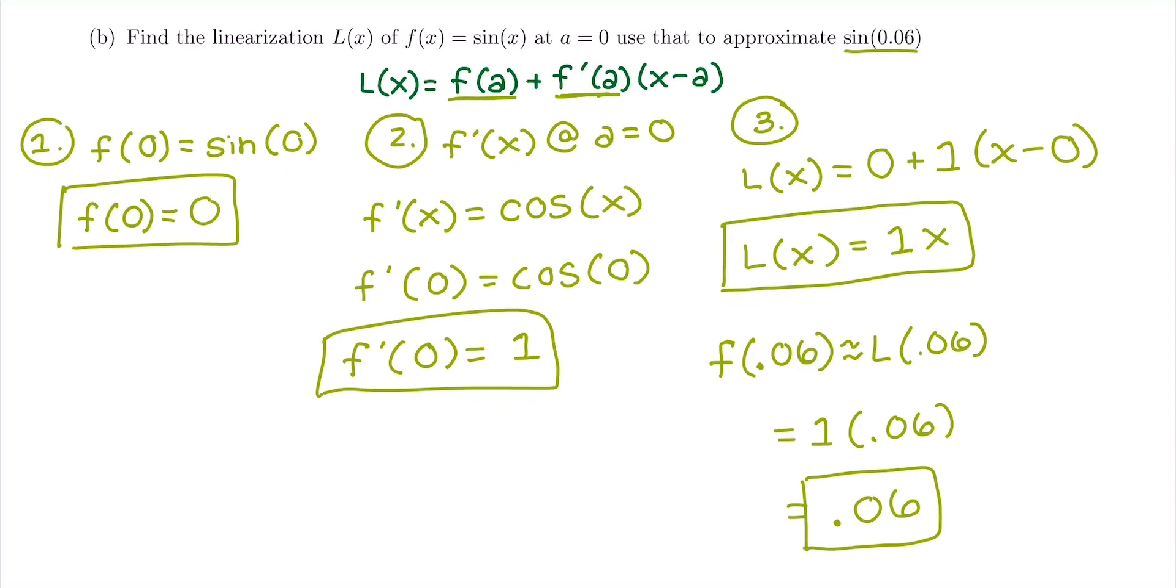If you have a calculator, you can grab it and make sure that your linear approximation is close to the value. You can also plug into the percent error formula given in the initial explanation about linear approximation, but that is a pretty good answer for what sine of 0.06 is.